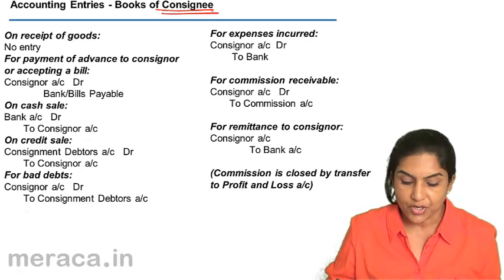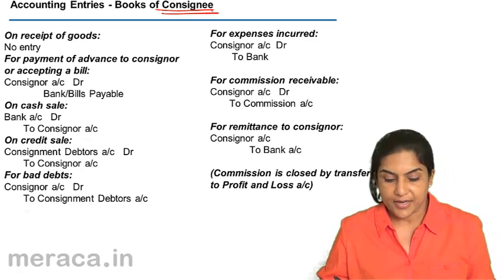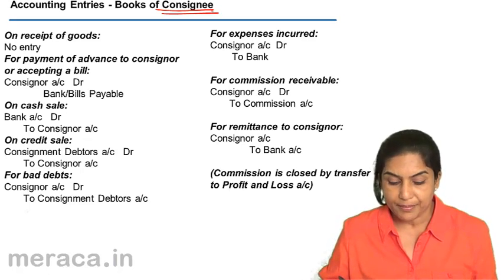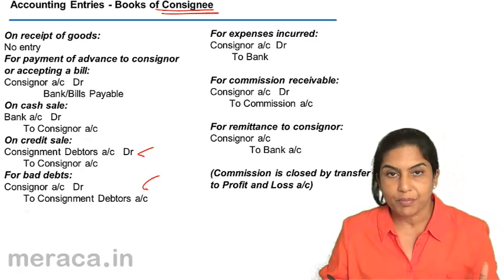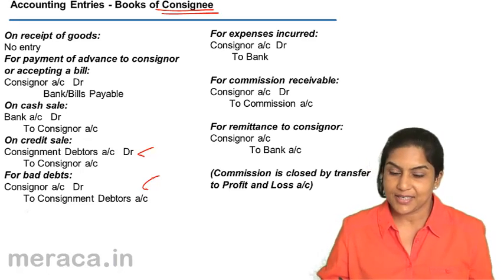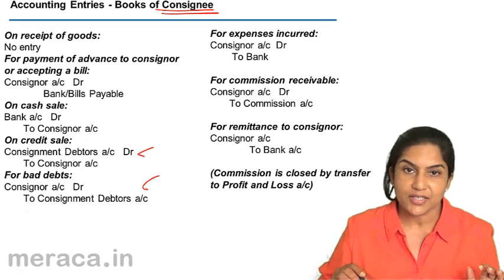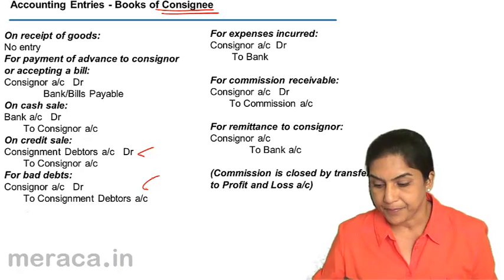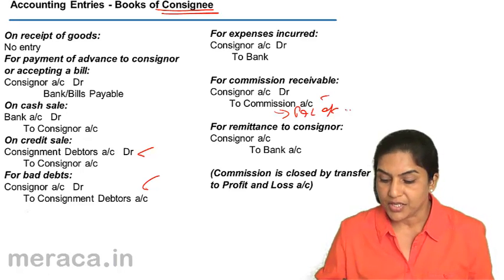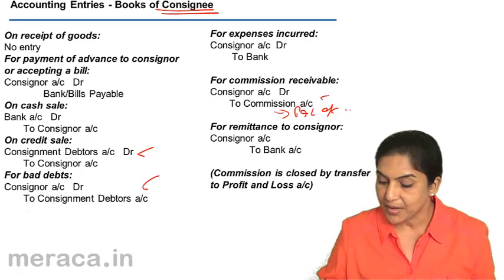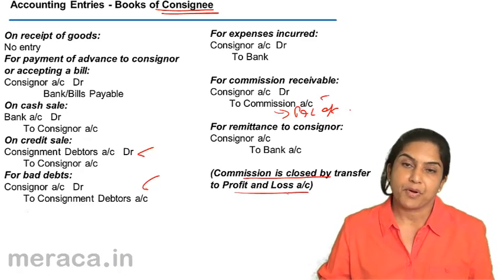For a credit sale, money is not received, so the entry is consignment debtor's account debit to consigner account. In case there are bad debts, the consigner will bear them, so the entry is simply reversed: consigner account debit to consignment debtors. For expenses incurred, consignor account debit to bank, because these expenses are not the consignee's expense and have to be reimbursed by the consigner. For commission receivable, consignor account debit to commission — this is an income which goes to the profit and loss account. When money is sent to the consignor, consignor account debit to bank.